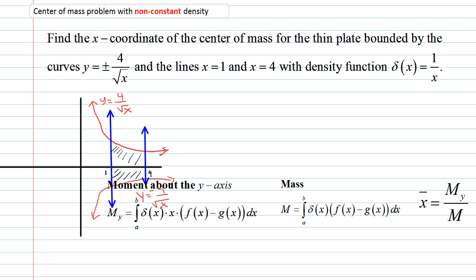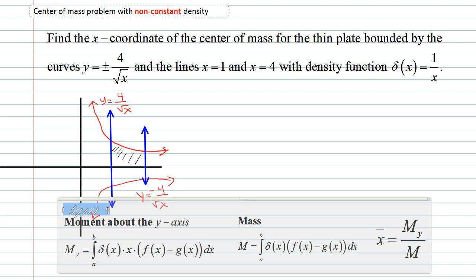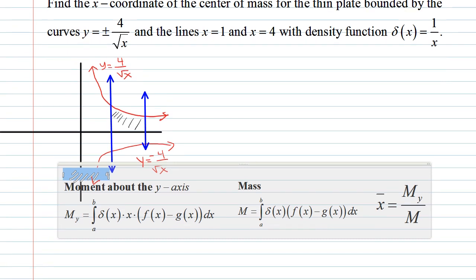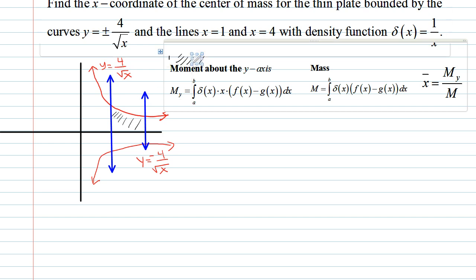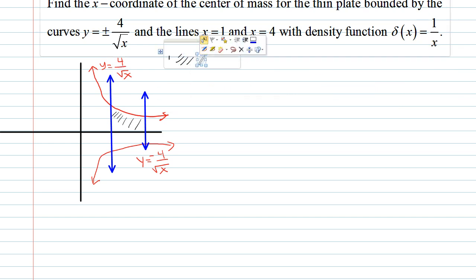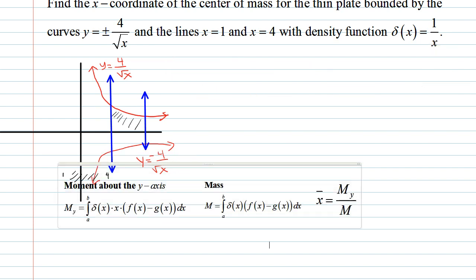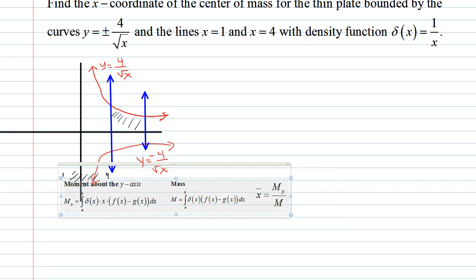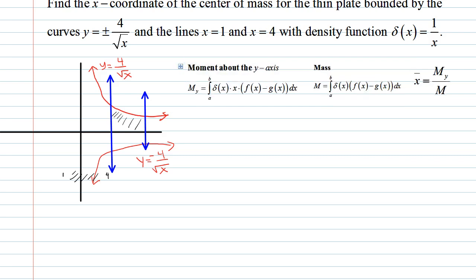And so we need formulas. We have the following formulas for center of mass when the density isn't constant. We have the moment about the x-axis, the moment about the y-axis, and the moment about the y-axis divided by the mass.